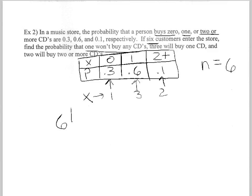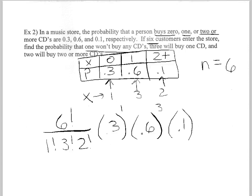I'm going to set this up: six factorial over one factorial times three factorial times two factorial, all my X's. The probability of someone not buying any CDs, the number of people I want. The probability of buying one CD, the number of people I want. The probability of buying two or more CDs, the number of people I want.